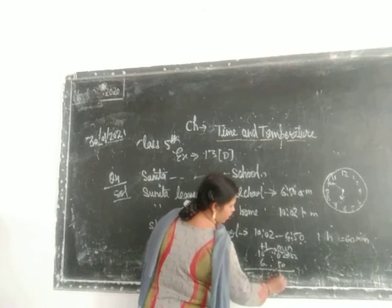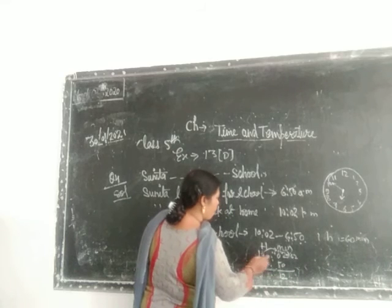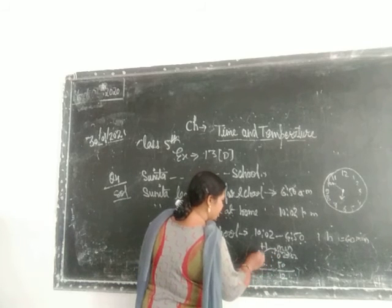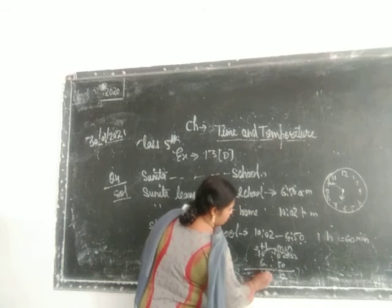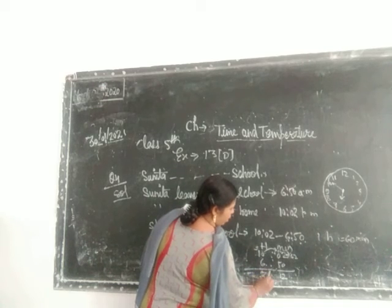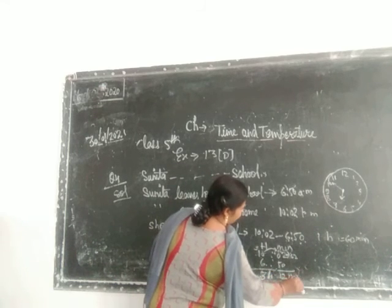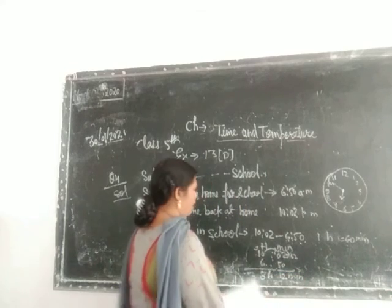62 minus 50 means 12. Now, when we take the borrow from here, it means the hours become 9. 9 minus 6 is 3. So the answer is 3 hours 12 minutes.